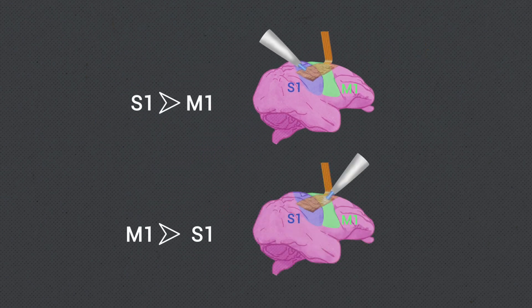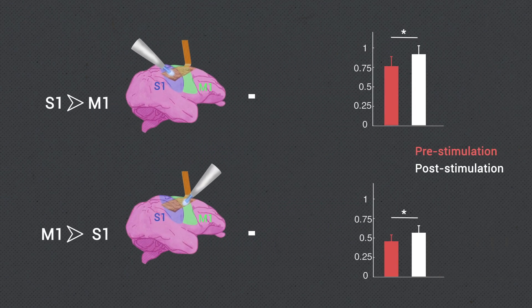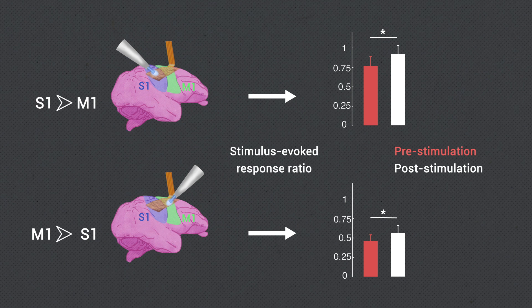Within minutes, stimulation in S1 or M1 significantly strengthened the average connectivity between these areas.